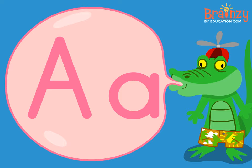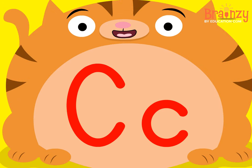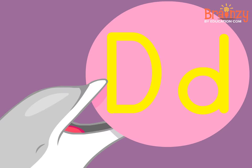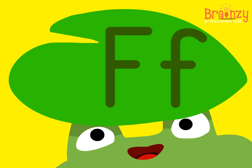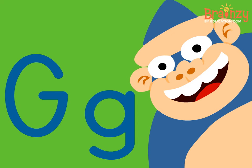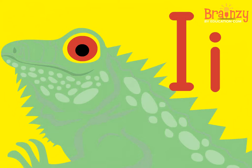Alligator, a, and butterfly, b, c for cat, and dolphin starts with d. E like elephant, f like frogs, g for gorilla, h for hog. I for iguana.